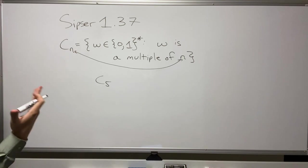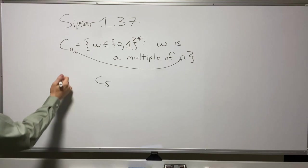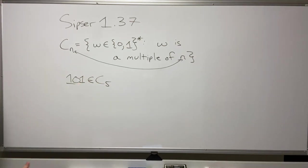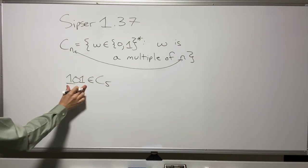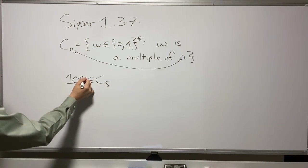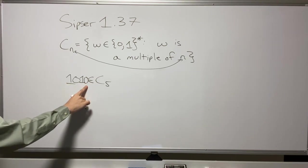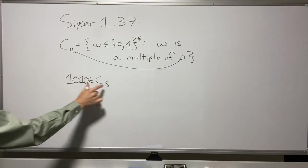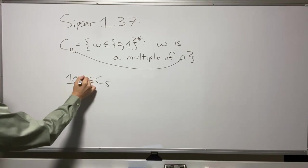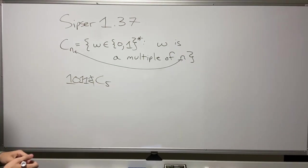As an example, C5 is all binary numbers that are a multiple of five. Zero corresponds to either the string of all zeros or the empty string. Non-trivially, the string '101' is in there too since it represents five. Reading '1010' is also in there since 10 is a multiple of five, but '1011' is not a multiple of five, so it's not in C5.